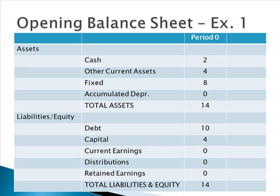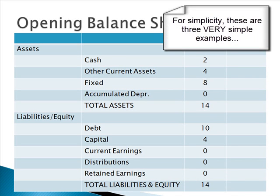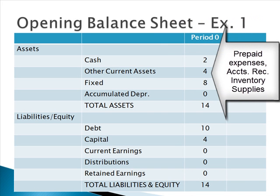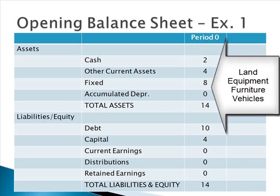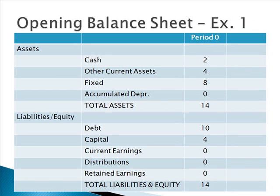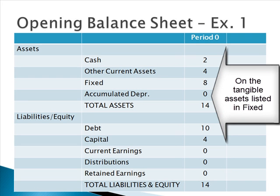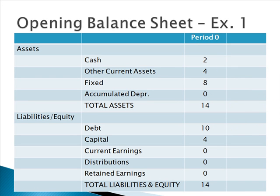In this opening balance sheet, we see several things. Since it is a balance sheet, all assets are listed in order of liquidity. We have cash and then other current assets. Other current assets would be equal to prepaid expenses, accounts receivable, inventory, supplies, and so on. Fixed assets would be such things as land, equipment, furniture, and vehicles. Then there is accumulated depreciation, which would be the depreciation of those tangible assets listed under fixed assets. If they were not tangible assets, then amortization would apply as opposed to accumulated depreciation.